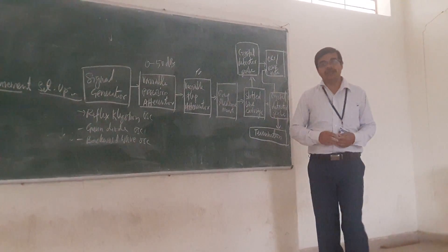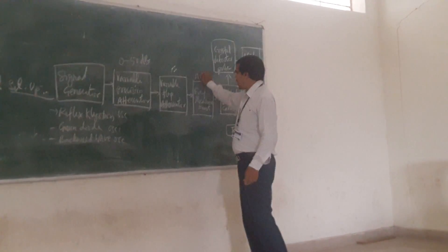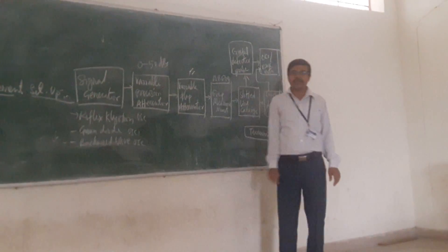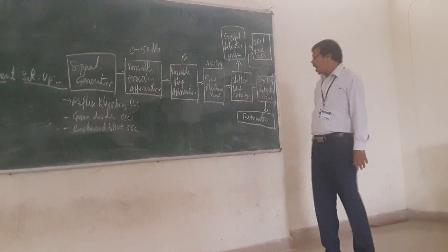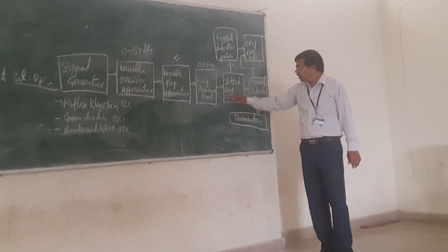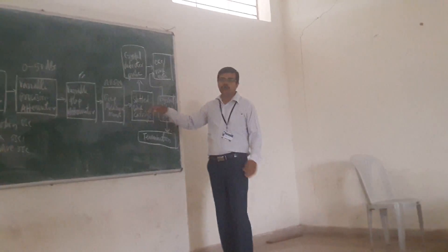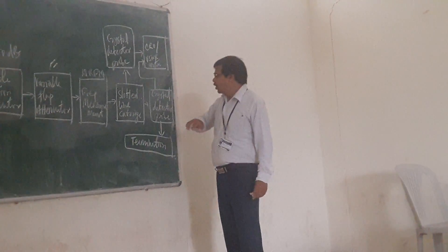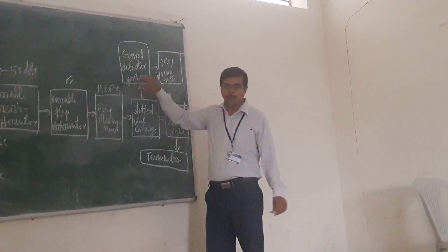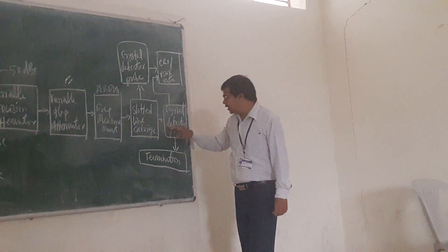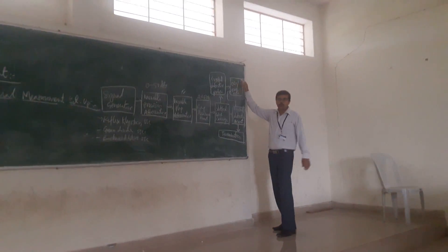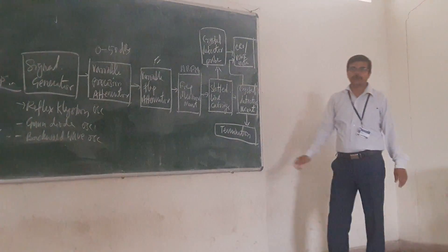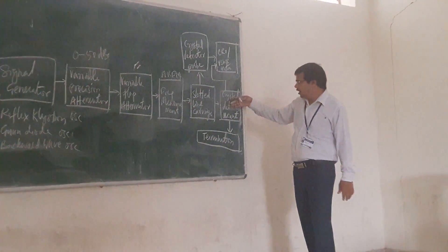Then you are giving the frequency meter. Frequency meter means you are having the direct reading frequency meter, so directly you can measure what is the frequency of the signal. After that we are having the slotted line section. From the slotted line you have two options: either you can go for your crystal detector probe, or from your probe you can go for your CRO or your VSWR meter.